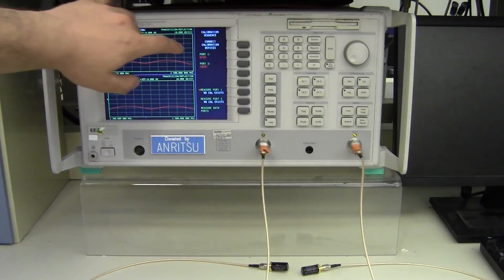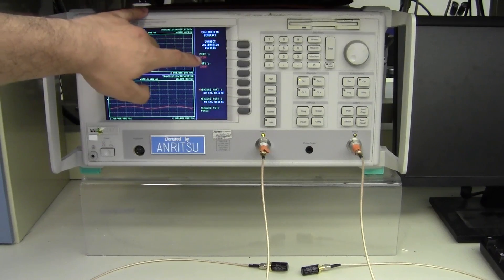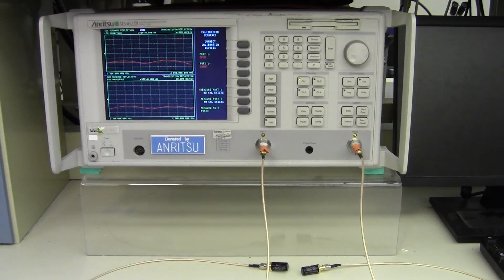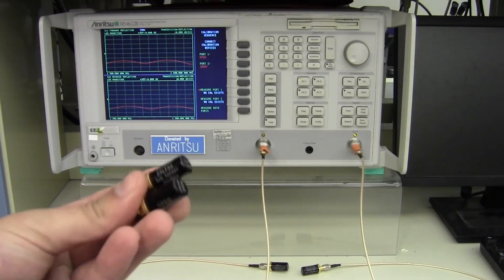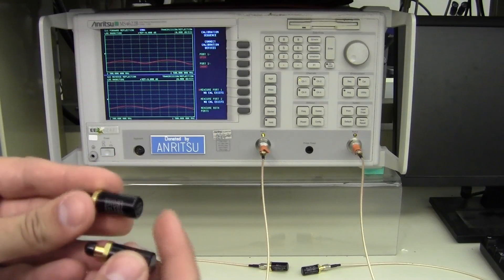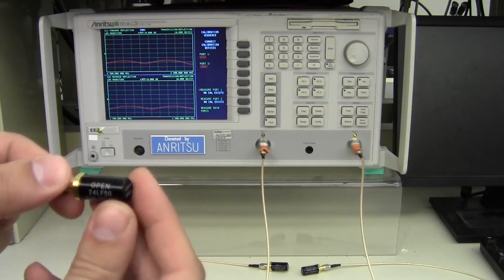For the next calibration step, it specifies that port 1 should have an open load and port 2 should have a short load. Calibration kits, in addition to the two 50 ohm terminations, include two additional loads that are labeled short and open.